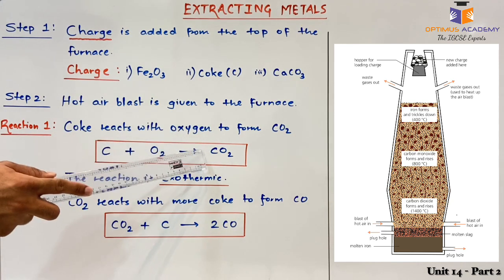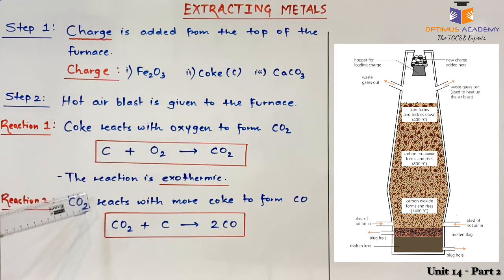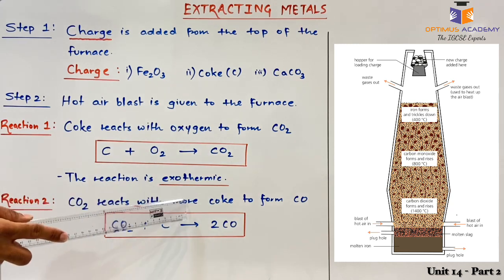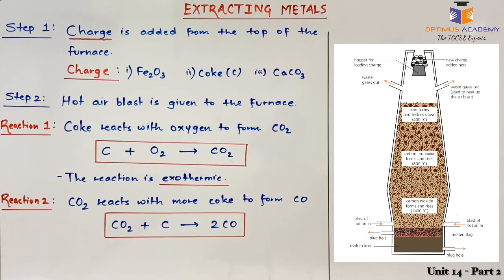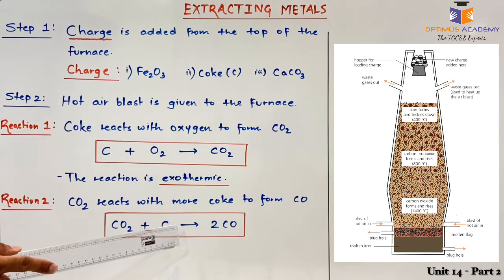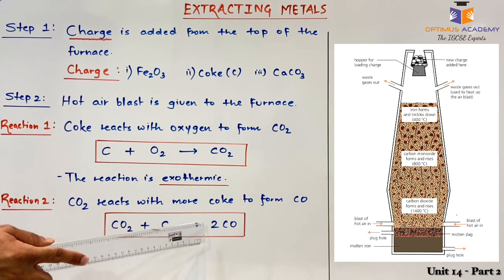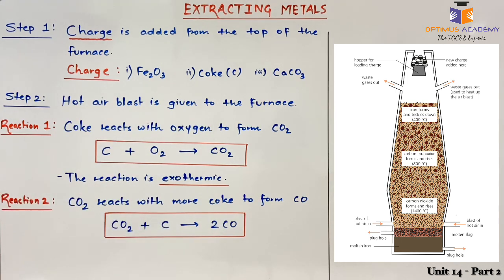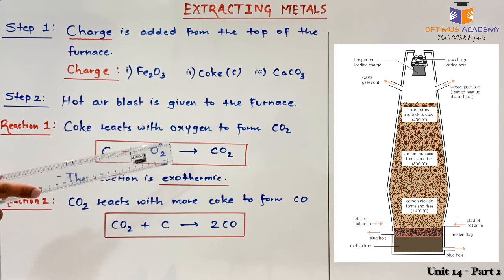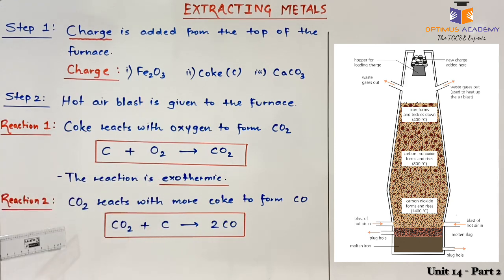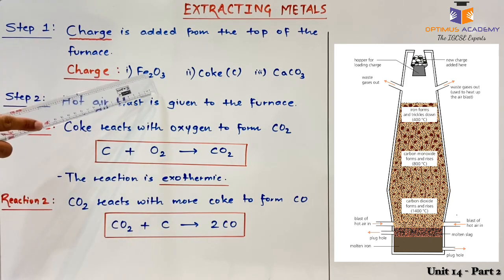The second reaction is that carbon dioxide reacts with more coke to form carbon monoxide: CO2 + C → CO. This carbon monoxide will help in the next step to reduce iron from iron oxide.